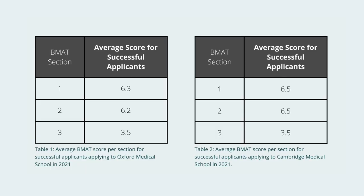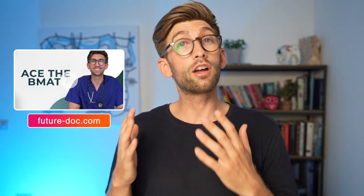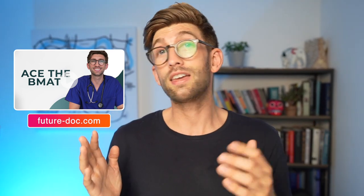When applying to Oxbridge, aim for a combined score of around 14 out of a maximum of 18 across sections one and two. An online program has helped several people get into Oxbridge medical schools and can show you how to achieve a 14-plus score in the BMAT.